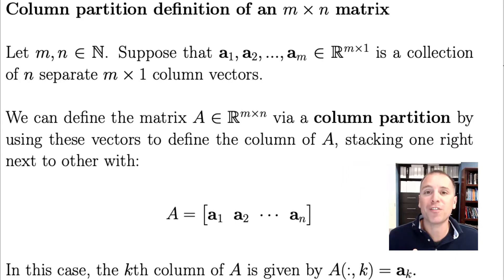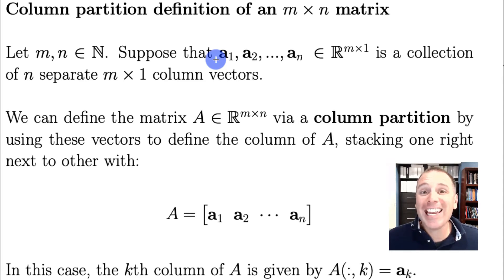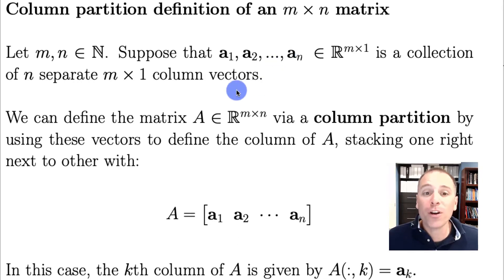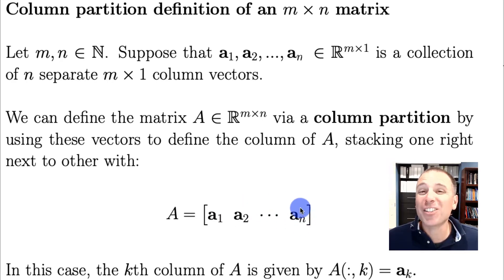In addition to the row partition, we also have the column partition definition of a matrix, where we define the matrix column by column. We assume we've defined N different column vectors A1, A2, all the way to An, each with M rows and one column. To define matrix A using a column partition, we stack these columns left to right — A1 to the left of A2, continuing until we reach the last column An.